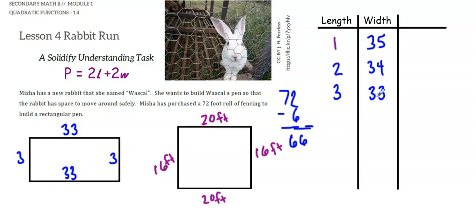Now I'm noticing a definite pattern. Every time the length is going up by 1, the width is going down by 1. I'm also noticing that my length plus my width is always 36.